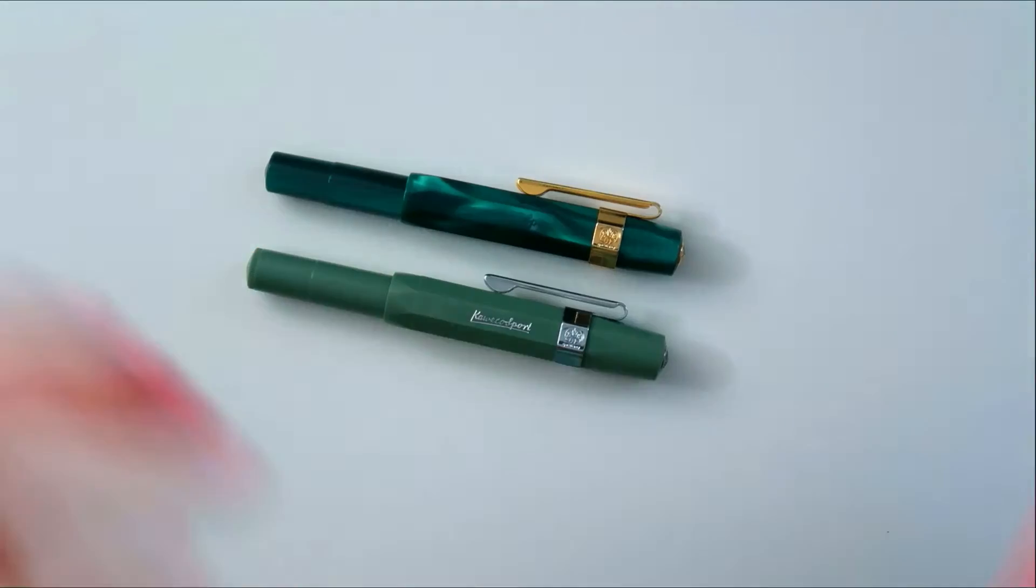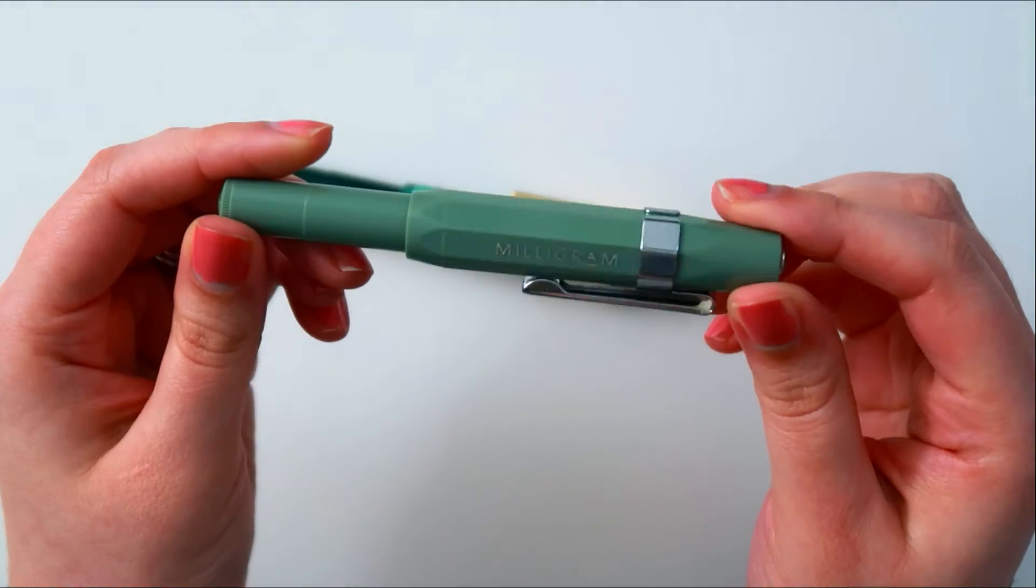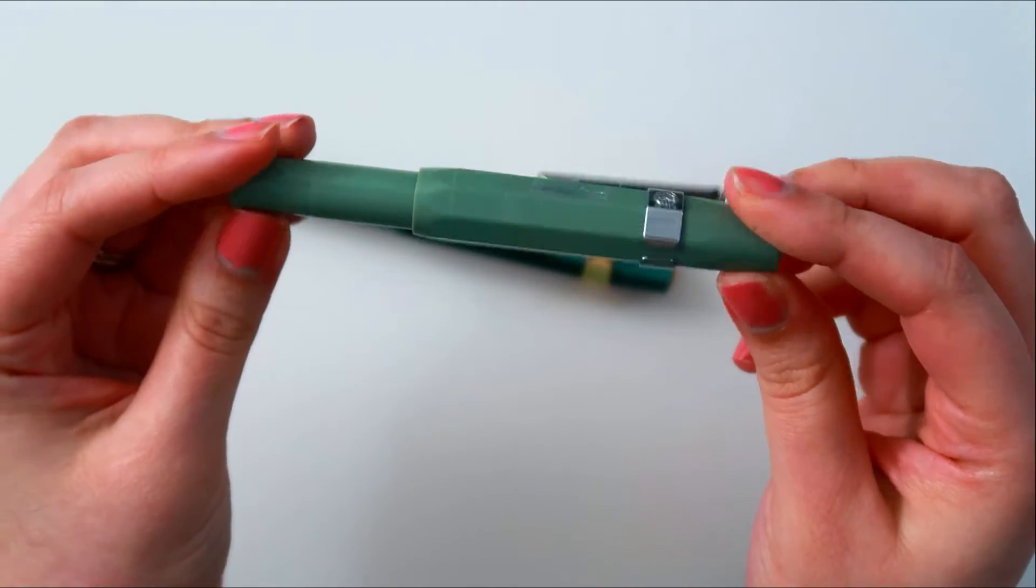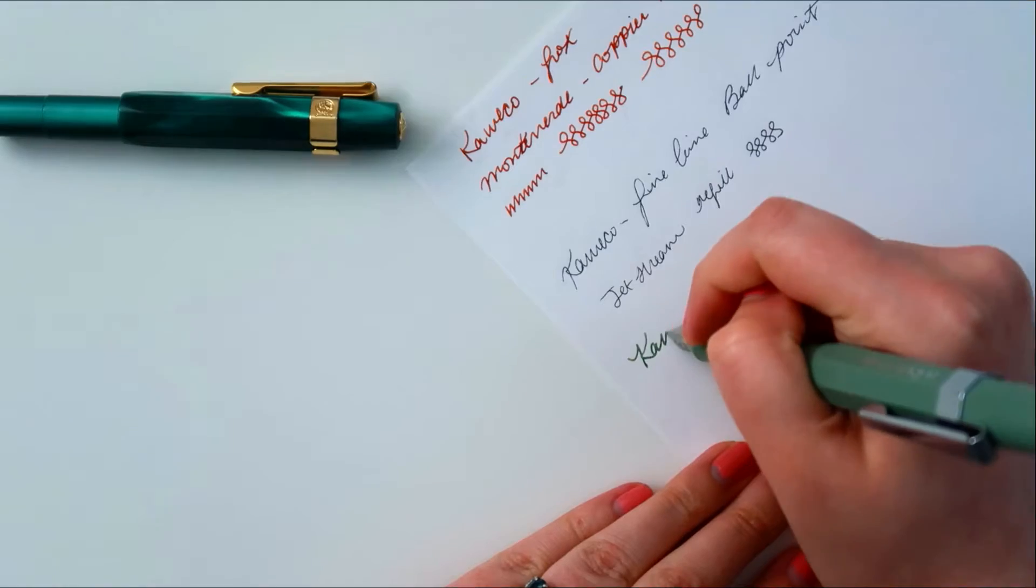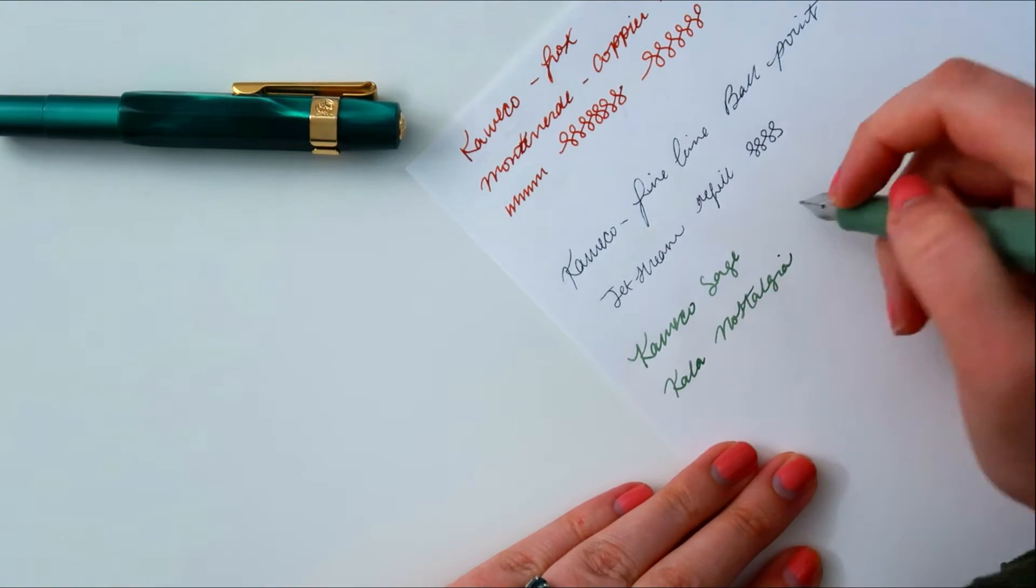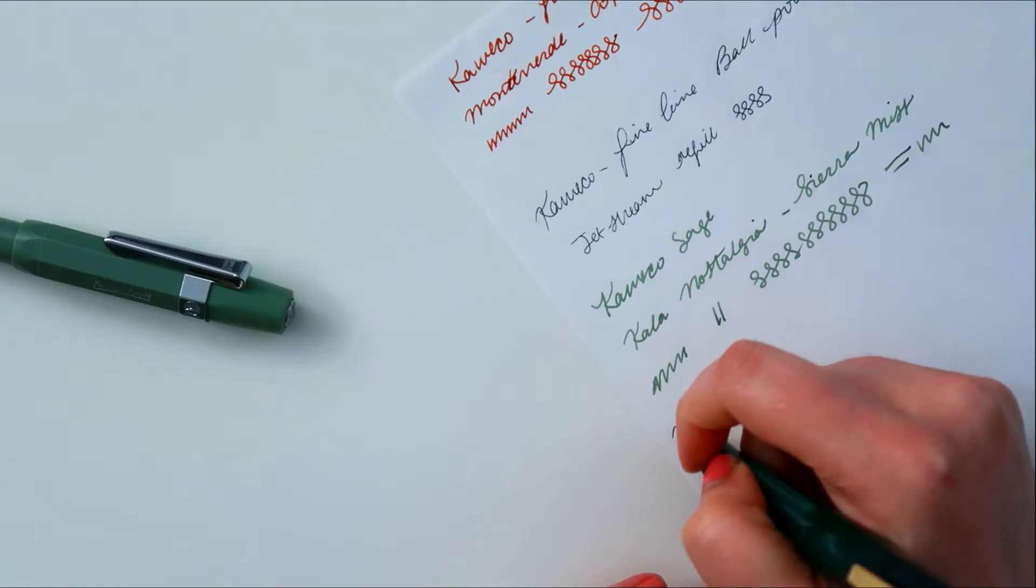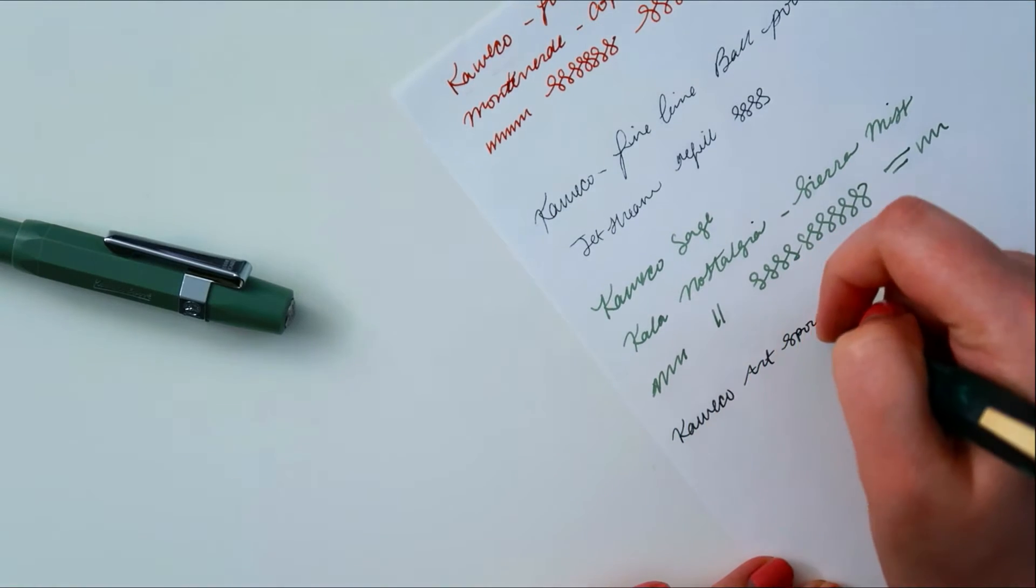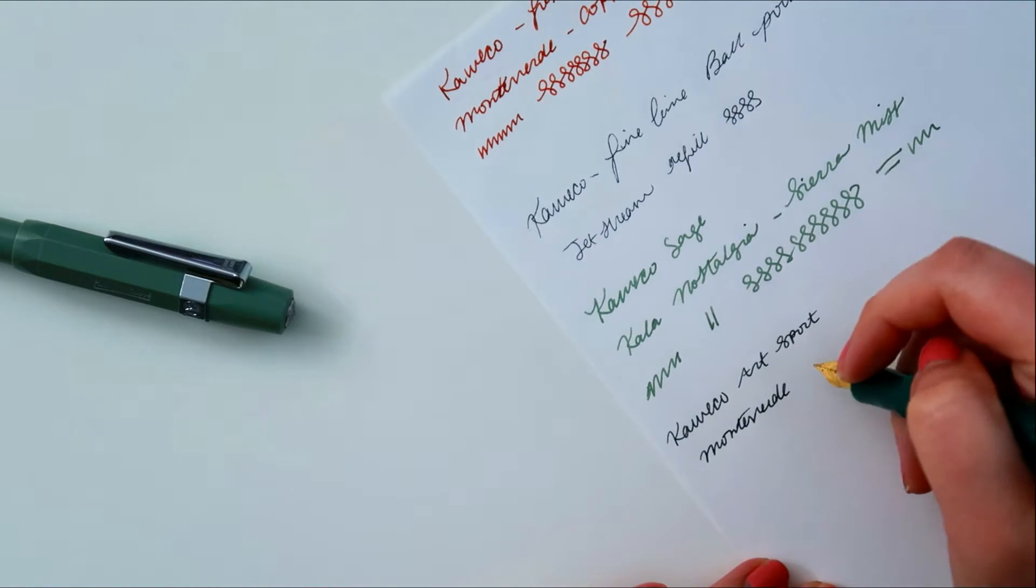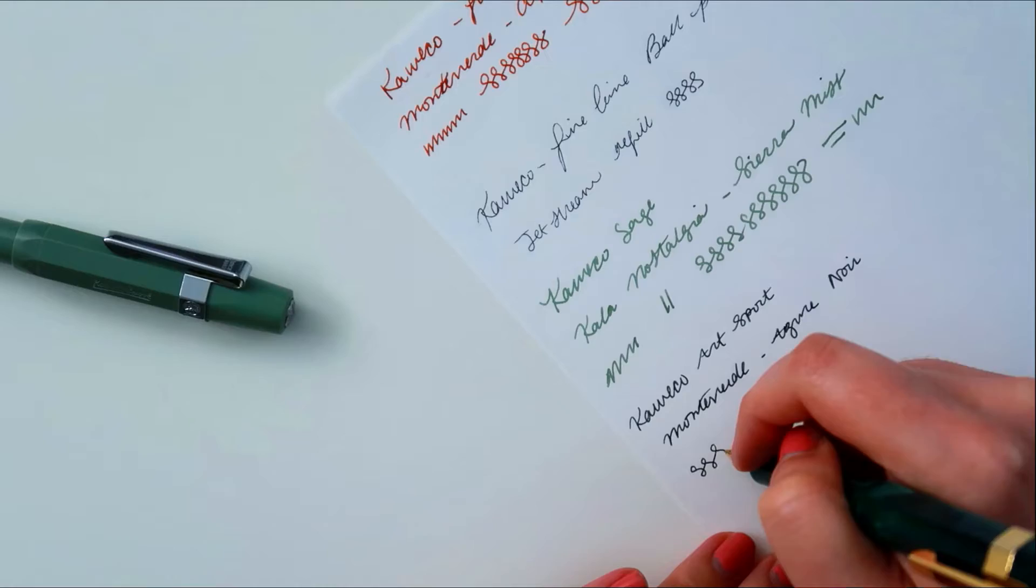Now, out of my fancy exclusives, I have the Milligram Sage and an Artsport, which I really love. These two are both inked up. One is inked up with Sierra Mist, which is my favorite ink right now. And my Artsport is inked up with Monteverde's Azure Noir. I'm sorry if I'm pronouncing that wrong. It is actually running low, so I do need to refill it.